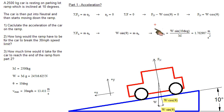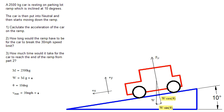If that's all you cared about, you can stop the video here. But we're going to move on to part two. Part two asks about the length of the ramp. How long does the ramp have to be for the car to break the 30 mile an hour speed limit? So as it's going down, it's accelerating. Its velocity is picking up, up, up, up.